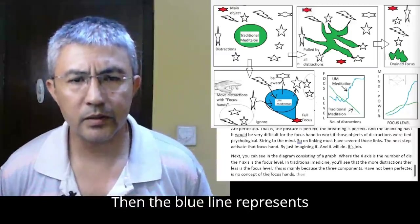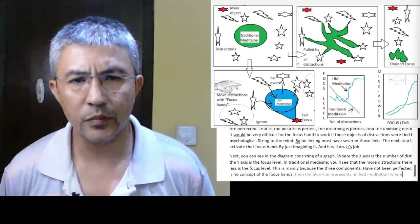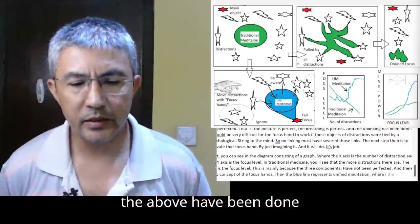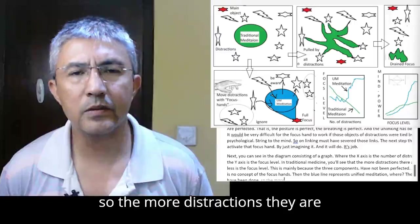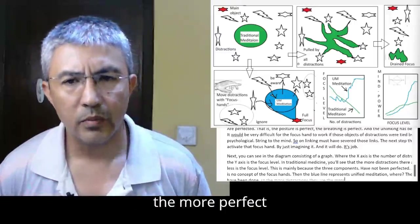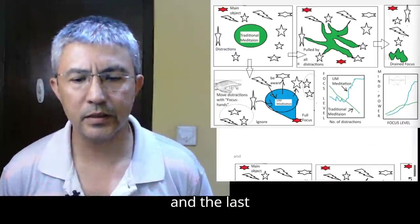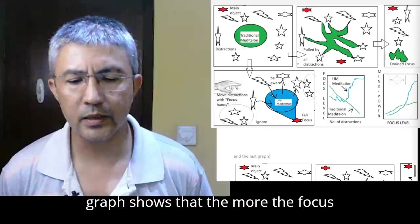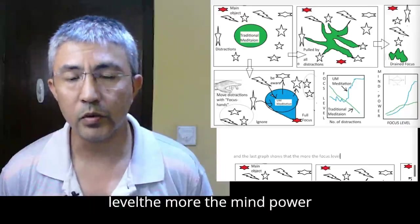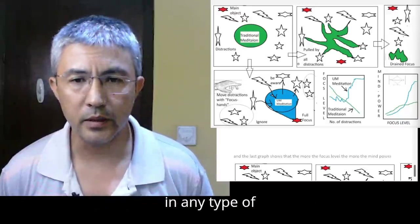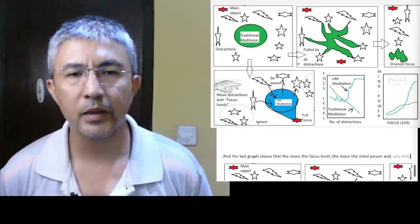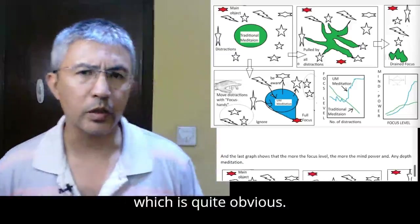Next, you can see in the diagram consisting of a graph where the x-axis is the number of distractions and the y-axis is the focus level. In traditional meditation, the more distractions there are, the less is the focus level. Then the blue line represents unified meditation where the more distractions there are, the more perfect the system works. The last graph shows that the more the focus level, the more the mind power in any type of meditation.